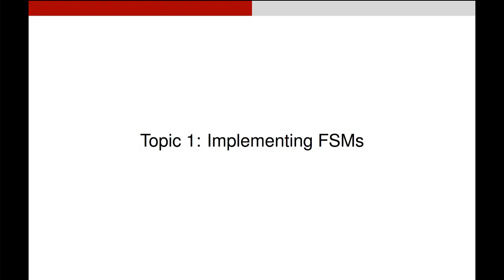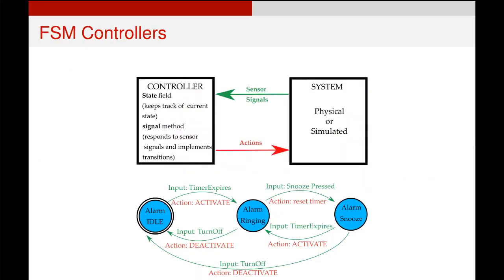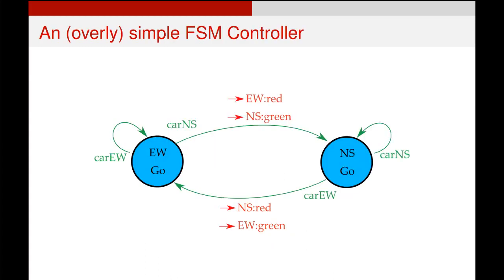During the last video we talked about a traffic light finite state machine and the difference between a Mealy and a Moore finite state machine. But what we really want to do is implement a controller for this. Taking a step back and thinking about classes in Java, our system and our controller are separate. The system sends sensor signals out to the controller, which uses a field called 'state' to track which state it's in and a method called 'signal' triggered every time a new sensor signal is retrieved. The controller then applies actions back to the system.